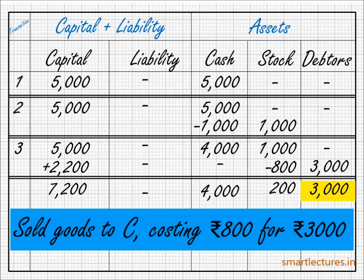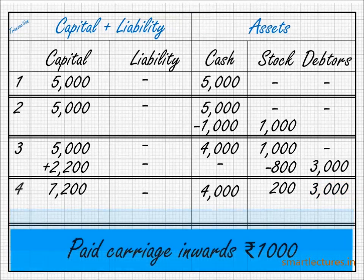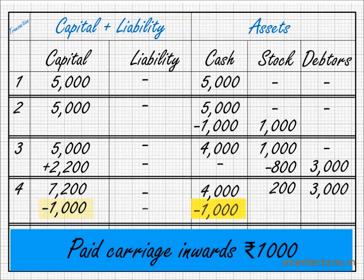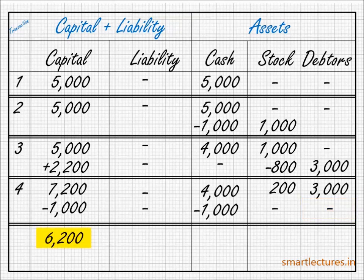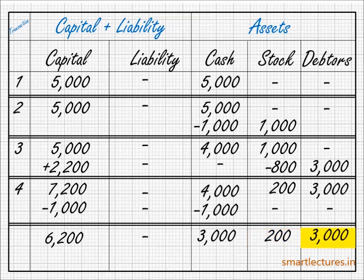Now let's move to the next transaction: Paid Carries Inward, Rs. 1000. This is an expense. Whenever there is a loss or expense, there is a decrease in capital. So in the capital column, minus 1000, because expenses always reduce our capital. On the cash column, minus 1000. Stock, nothing. Debtors, nothing. So the new equation will be: capital 6200, cash 3000, stock 200, debtors 3000.